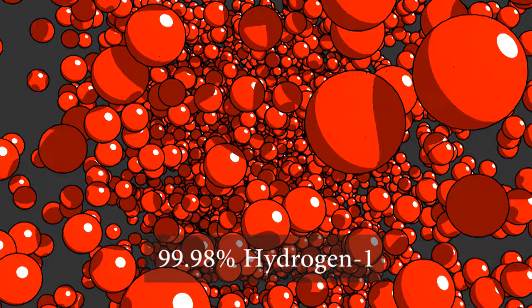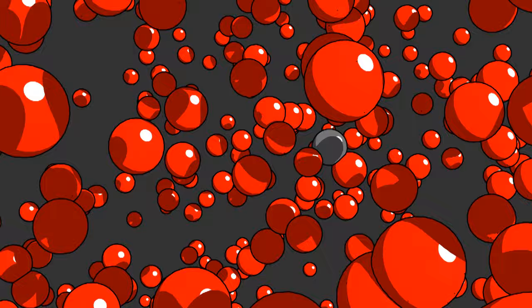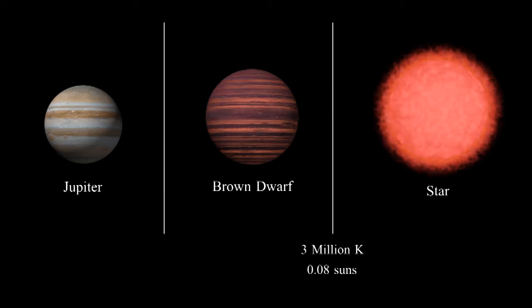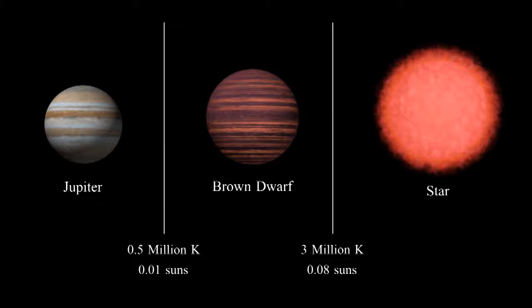But the remaining 0.02% is hydrogen-2. There's not a lot of it, but brown dwarfs can convert this hydrogen-2 into helium. Objects that are below about 1% the mass of the sun are too small for this. Even the largest planet, Jupiter, is much too small to do fusion.